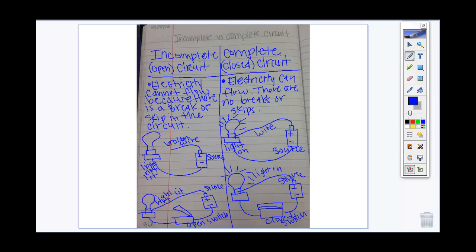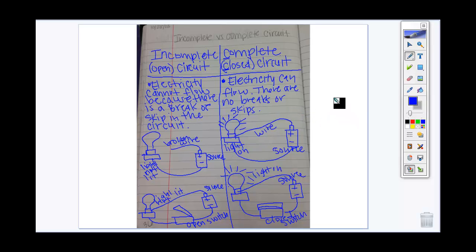These are two huge things you're going to see. You need to be able to recognize the word incomplete, which means open, and complete, which means closed. Complete and closed both start with a C — that might be an easy way to help you remember. I'm going to switch over to a little demonstration so we can see the difference between an incomplete open circuit and a complete closed circuit. Tomorrow you'll get to investigate making lots of complete circuits.